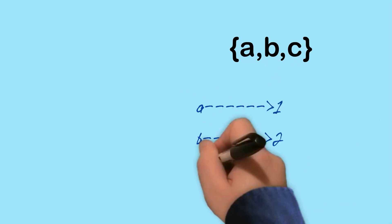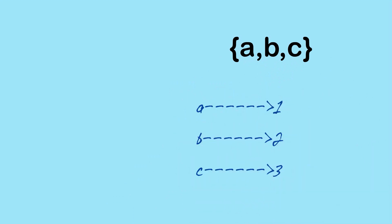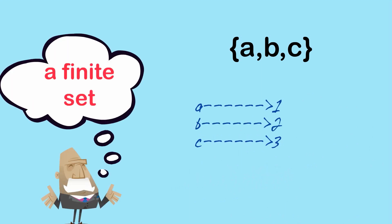So here's a set that contains three elements, A, B and C. So because the number of elements in the set is either a counting number, 1, 2, 3, 4, 5, etc., or it's zero, we say that it's a finite set.